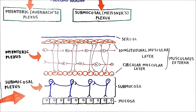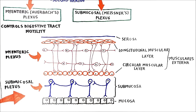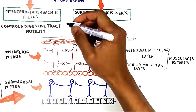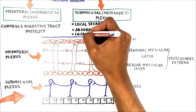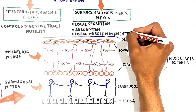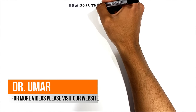Regarding the functions of these plexuses: the myenteric plexus increases the tone of the gut as well as the velocity and intensity of contractions. This plexus is concerned with motility throughout the whole gut — in short, it controls digestive tract motility. As for the submucosal plexus, it is more involved with local conditions and controls local secretion and blood flow to the submucosa, which determines absorption, and also controls local muscle movements.